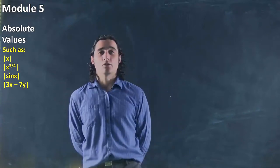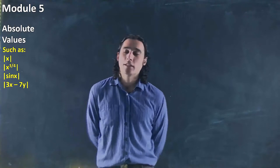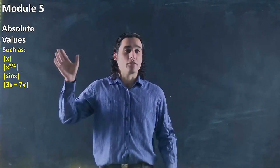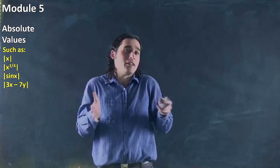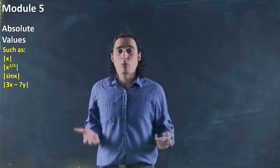Great. But let's start looking at absolute values. What do these mean? We get these weird bars. We have some term with bars on either side of it. What does that even mean?